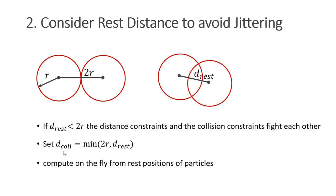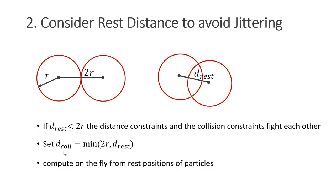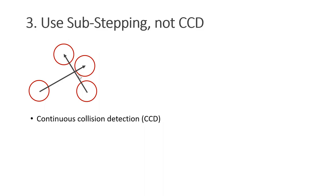My third trick is to use substepping instead of continuous collision detection. Let's assume we have two particles and they do not collide at the beginning of the time step. They do not collide at the end of the time step either, but they have collided during the time step. In order to detect that, one typically uses continuous collision detection or CCD. Here we test the overlap of the swept volumes of the two objects. A swept volume is the volume that is touched by an object that rotates and moves in a curved way, potentially. Of course, this is a complicated geometric object.